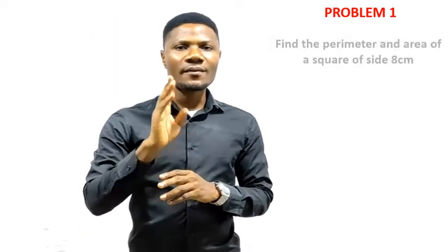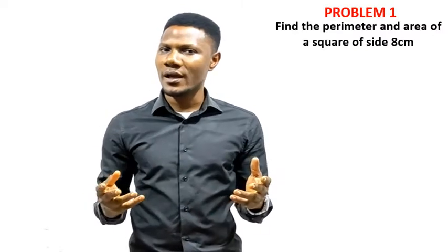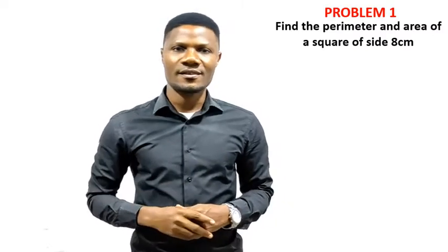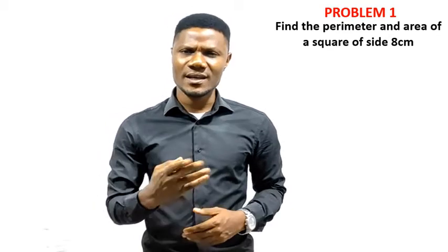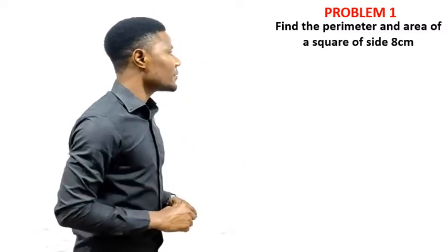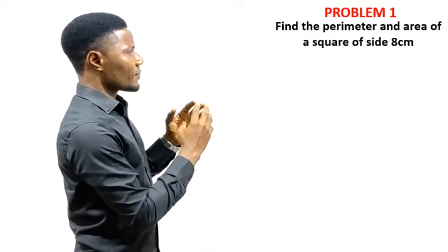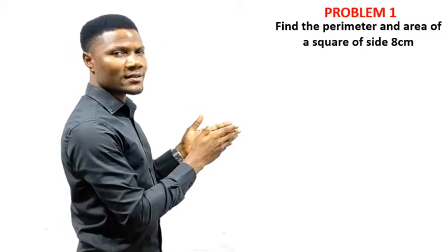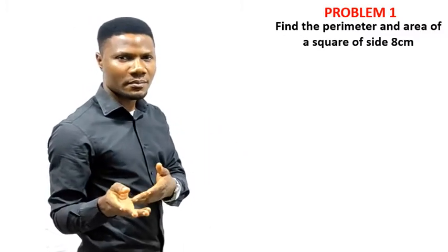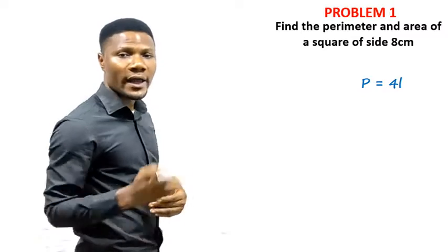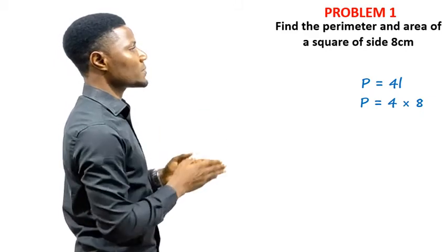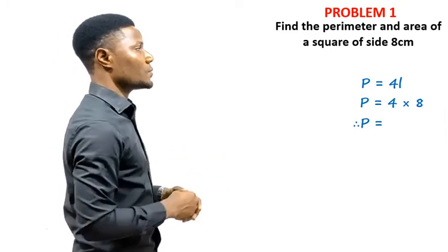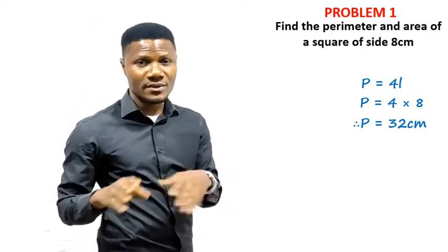Problem 1: Find the perimeter and area of a square of side 8 cm. To find the perimeter, we use P = 4L, where L = 8. So P = 4 × 8 = 32 cm.